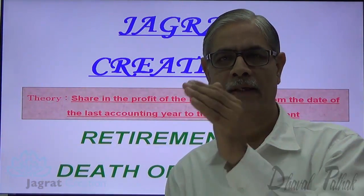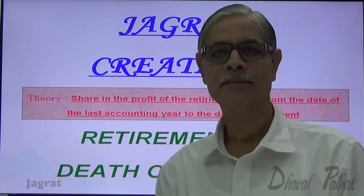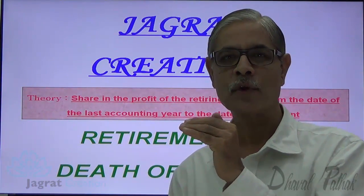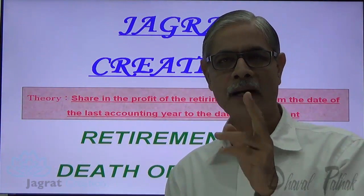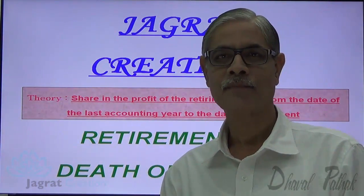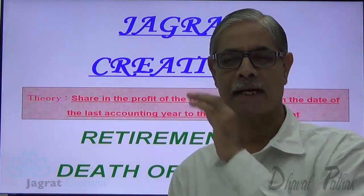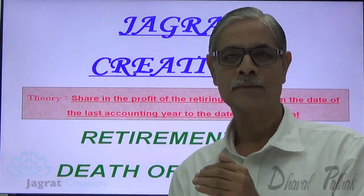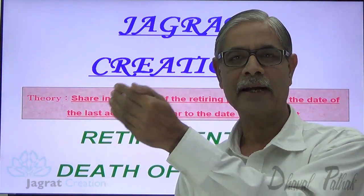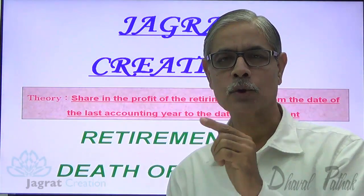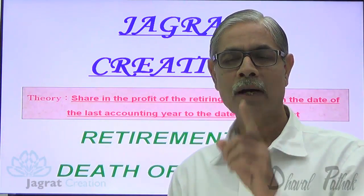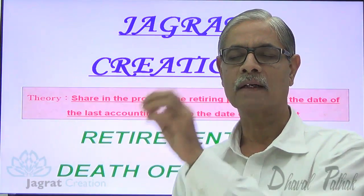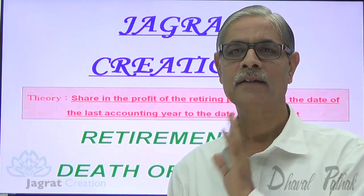A partner can retire at any point of time in between two year-ending dates — that is, during the accounting period. Suppose the accounting year ends on 31st December and a partner retires on 30th April. He has retired after four months from the last end of the accounting period, so the partner is entitled to a share in profit for those four months. How to find out this four-month profit and how to grant a share to the retiring partner — this is the point of consideration in this theory lecture.